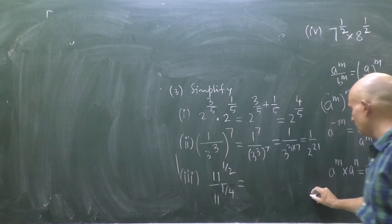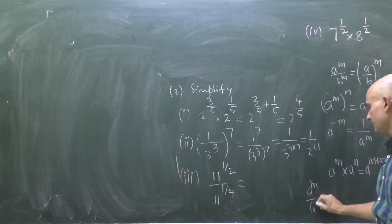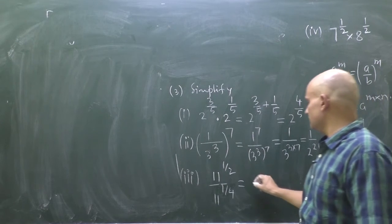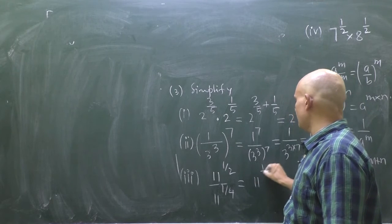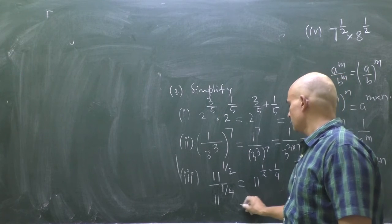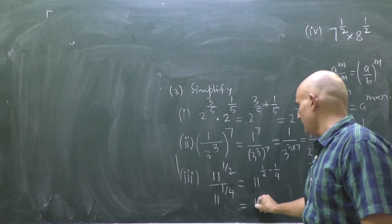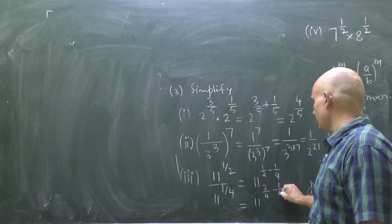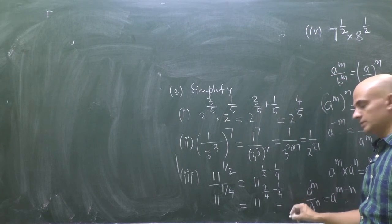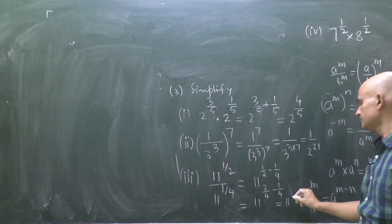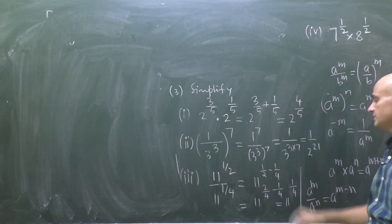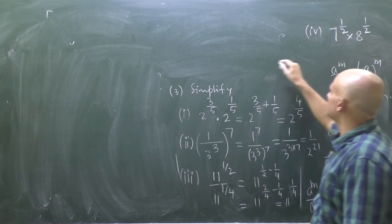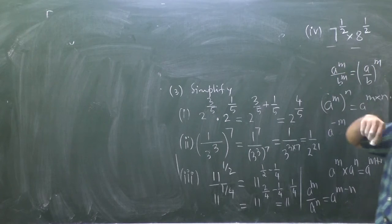For the next part, the bases are the same, so we use the rule a^m / a^n = a^(m−n). This gives 11 to the power (1/2 − 1/4). Writing 1/2 as 2/4, we get 2/4 − 1/4 = 1/4. So the answer is 11 to the power 1/4.